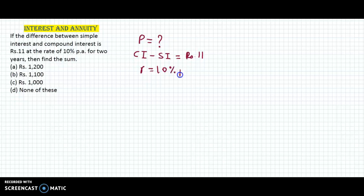So R is 10% per annum and the duration is 2 years. So N equals 2 years.